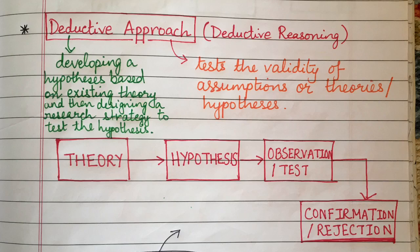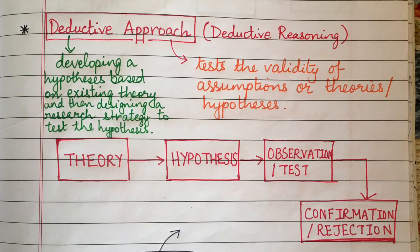Second, formulating the hypothesis in operational terms and proposing relationships between specific variables. Third, testing the hypothesis using relevant methods — typically quantitative methods such as regression, correlation analysis, and measures like mean, mode, and median. Fourth, examining the outcome of the test. Fifth, confirming or rejecting the theory. Finally, modifying the theory based on the results.